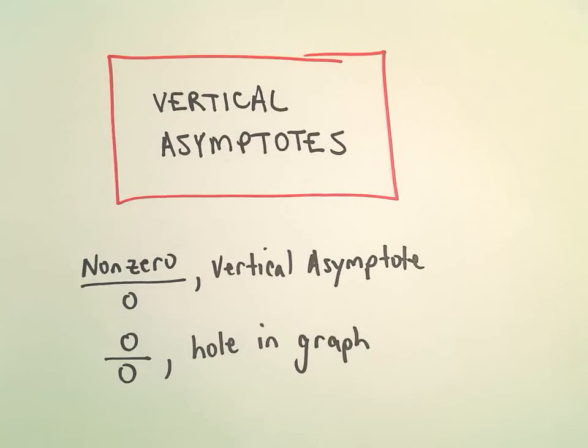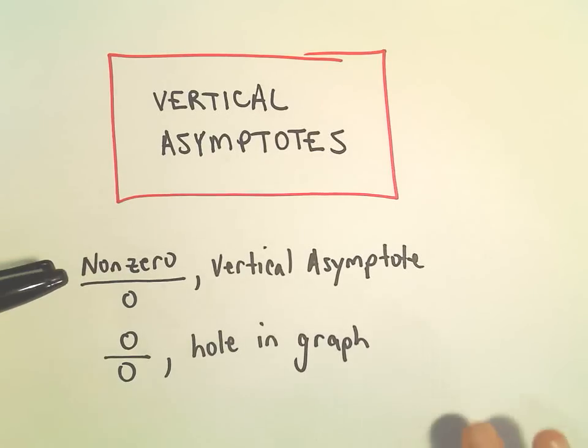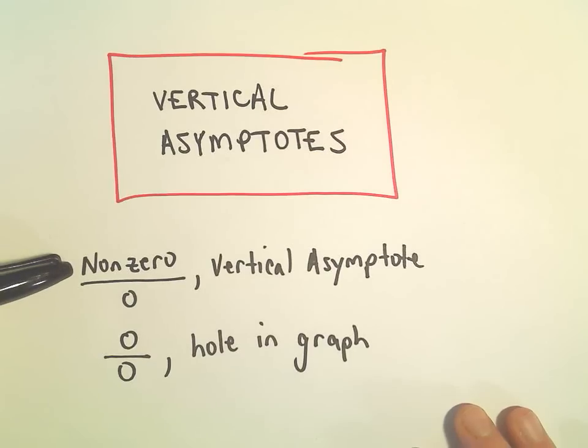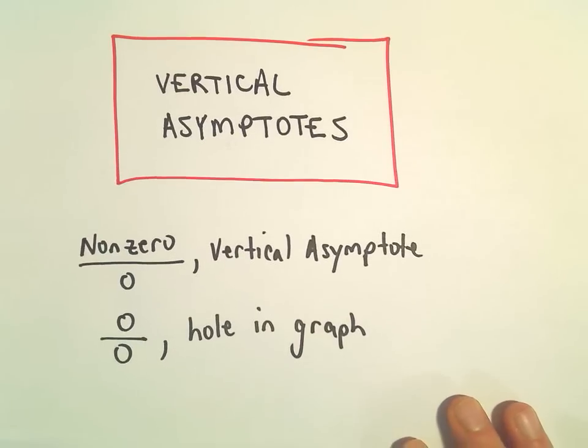All right, here we're going to look at finding vertical asymptotes of rational functions. The thing that you're looking for: if you figure out values of x, or whatever your independent variable is, that makes the denominator 0 but the numerator not 0, then you're going to have a vertical asymptote at that x-coordinate.